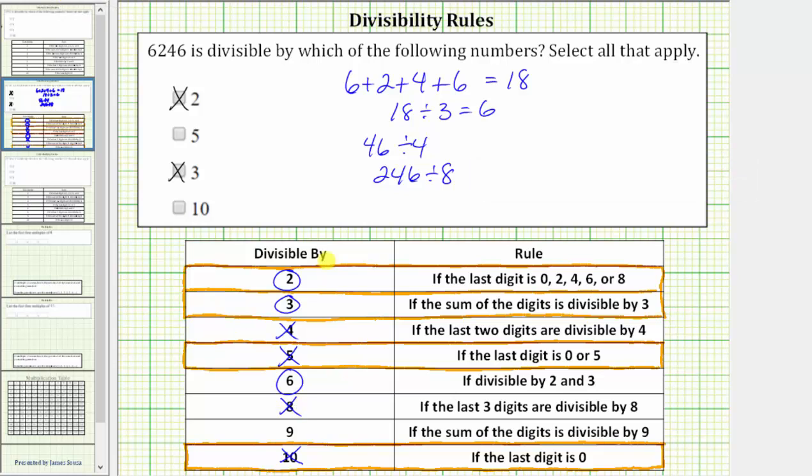And then finally, a number is divisible by 9 if the sum of the digits is divisible by 9. Well, we know from earlier the sum of the digits is 18. And because 18 is divisible by 9, so is 6,246. So we would also circle 9.